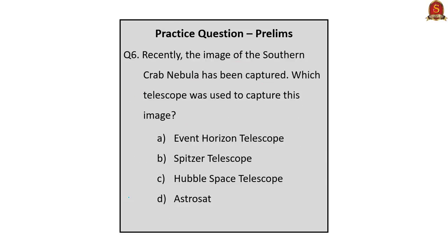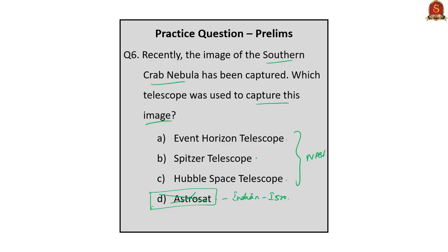The final practice question asks which telescope was used to capture the image of the Southern Crab Nebula. Options are: A — Event Horizon Telescope; B — Spitzer Telescope; C — Hubble Space Telescope; D — AstroSat. Option D can be eliminated as AstroSat is an Indian telescope launched by ISRO. The remaining three are NASA telescopes. From our discussion, the correct answer is C — Hubble Space Telescope.